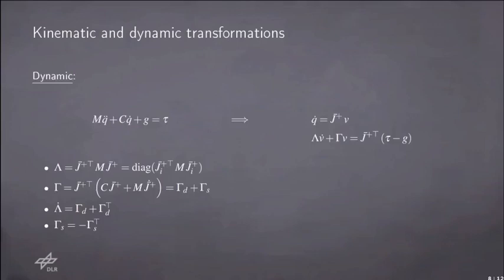Using the velocity mappings, the dynamic model of the robot can be written in terms of the velocity V. At this point, it is also clear why it was convenient to use the velocity V rather than X dot. In fact, since each of the J-bar was computed in the iterative procedure using the weighted Moore-Penrose inverse, the transformed inertia matrix lambda is block diagonal. Moreover, the Coriolis matrix gamma can be written as the sum of two terms, one block diagonal and one which is a skew-symmetric matrix, and it can be proved that the derivative of the inertia matrix lambda can be written in terms of the term gamma d. Once again, this is a very important property that is exploited in the stability analysis carried on in the paper.